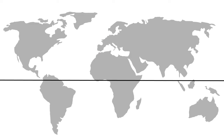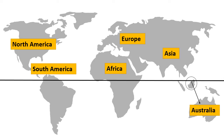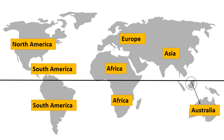The Northern Hemisphere is mostly land and contains most of the countries, including Europe, Asia, North America, two thirds of Africa, part of South America, and a small area of Australia. In the Southern Hemisphere, there are fewer countries, including most of Africa, most of South America, and Australia.